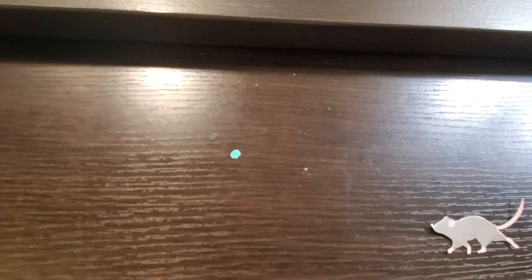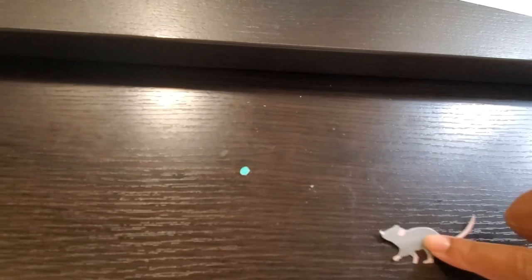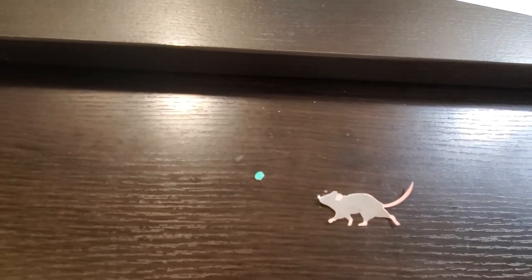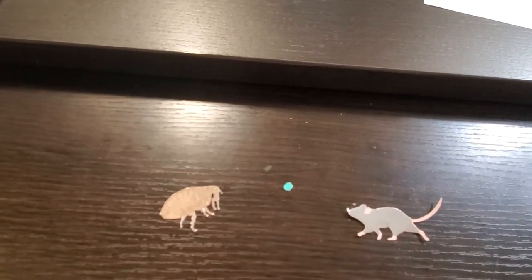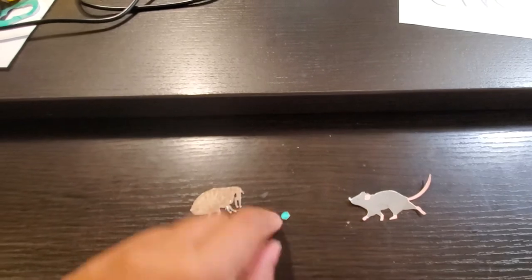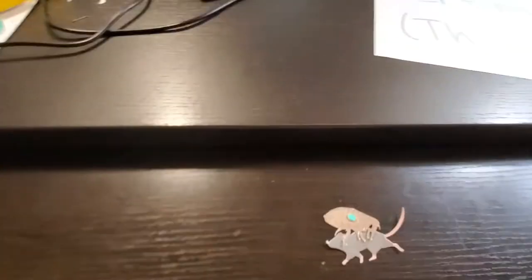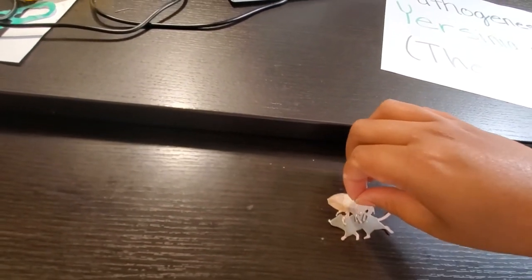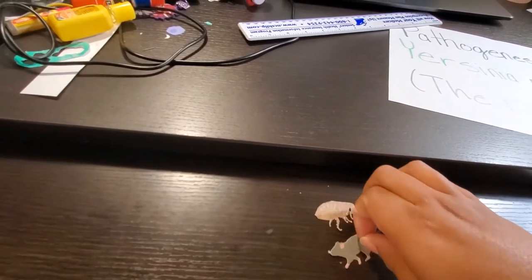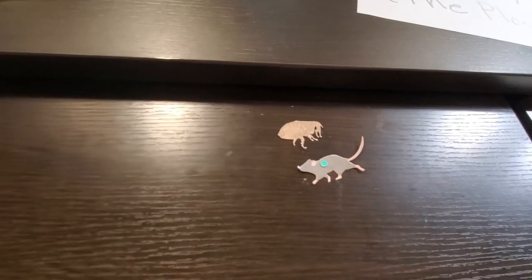In Yersinia pestis' normal enzootic cycle it cycles between rodents commonly mice, rats, squirrels, prairie dogs, and their ectoparasite the flea. When an infected flea bites a non-infected rodent it passes the pathogen to the rat and it cycles back and forth between infected rodents and non-infected fleas and infected fleas to non-infected rodents.